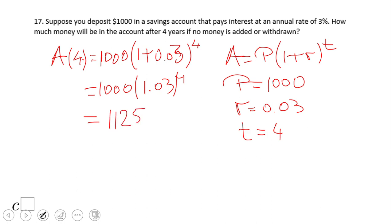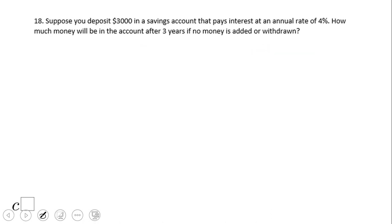1.03 to the fourth power times the original amount. I end up with one thousand one hundred and forty-five dollars. I'm gonna round it to the nearest cent, fifty-one cents. That is the answer for number seventeen. Pause this video clip and try number eighteen.